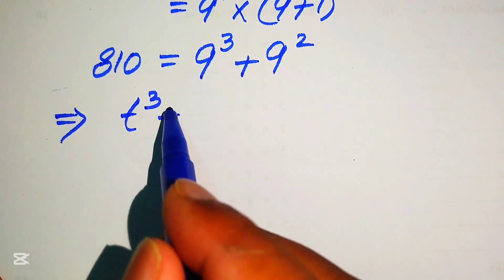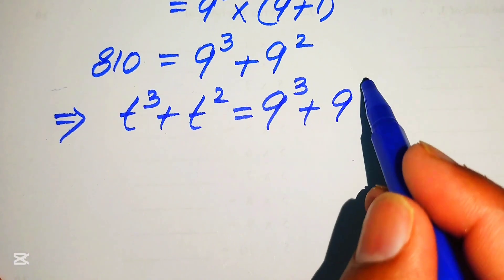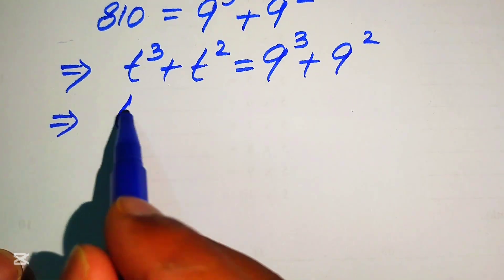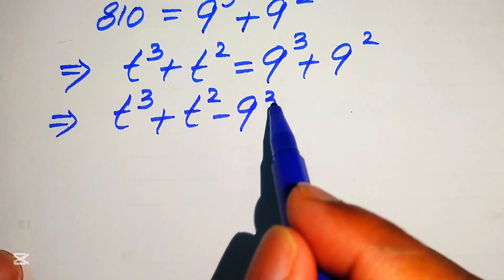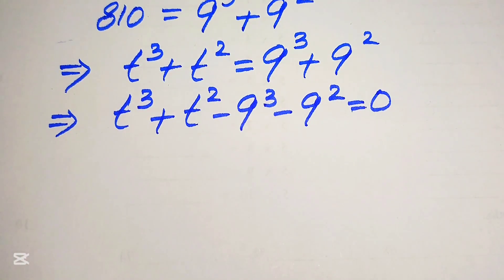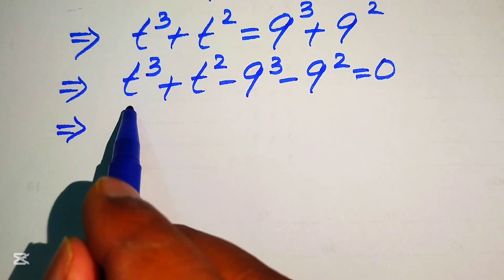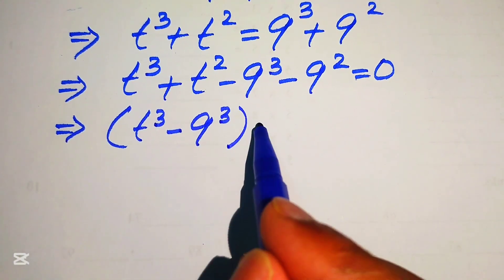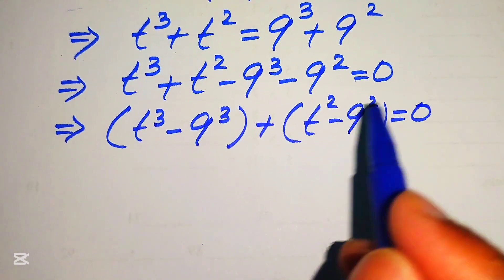We have t cubed plus t squared equals to 9 cubed plus 9 squared. Moving the right hand side terms to the left gives us t cubed plus t squared minus 9 cubed minus 9 squared equals to 0. We then pair the cubic terms together and the square terms together: t cubed minus 9 cubed, and t squared minus 9 squared, equals to 0.